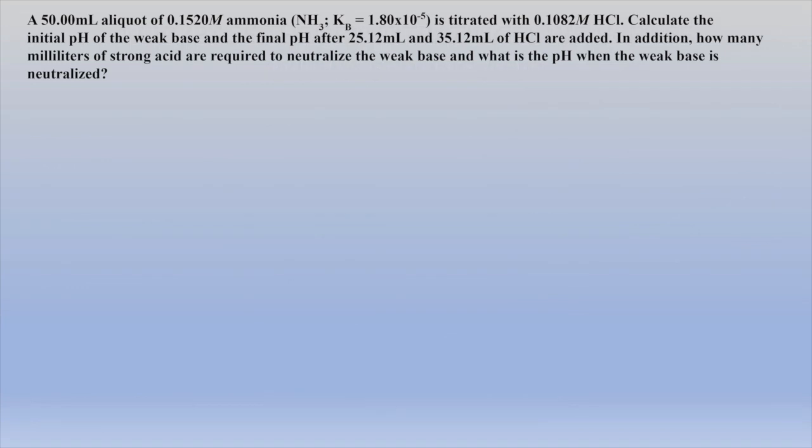So let's begin with a simple titration where given amounts of a strong acid, hydrochloric acid, are added to a weak base, ammonia, and we are asked to calculate the final pH after each addition. It may help to first diagram the problem to assure you know what is given and what is being asked.